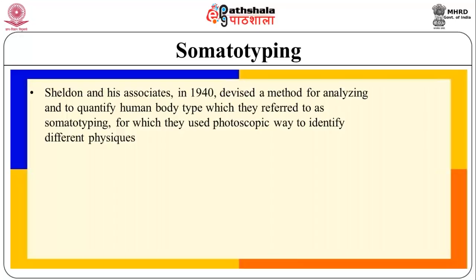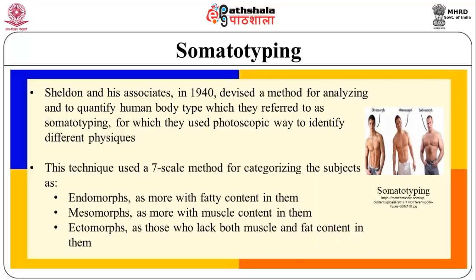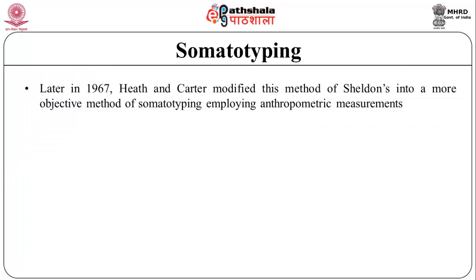Sheldon and his associates in 1940 devised a method for analyzing and quantifying the human body, which they referred to as somatotyping. They used a photoscopic approach to identify different physiques, employing a 7-point scale method for categorizing subjects as endomorphs, who have more fatty content; mesomorphs, who have more muscle content; and ectomorphs, who lack both muscle and fat content. Later in 1967, Heath and Carter modified Sheldon's method into a more objective method of somatotyping employing anthropometric measurements.